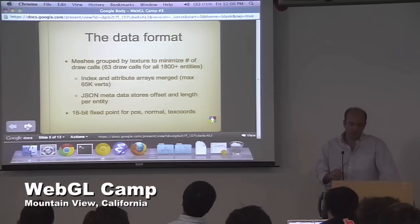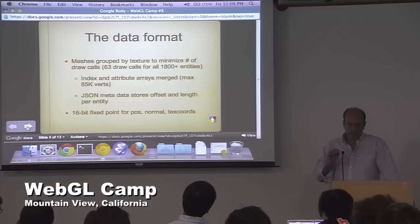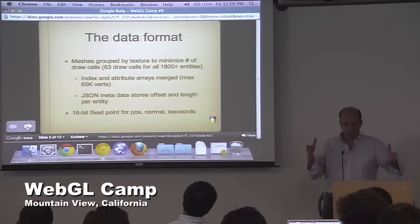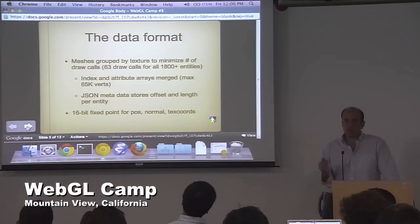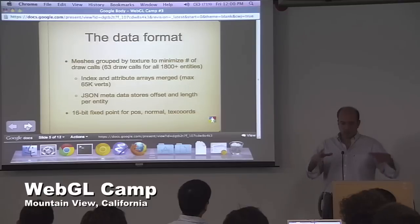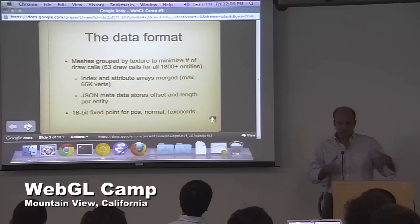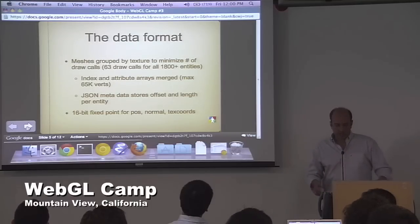At the same time, in that JSON file we kept track of exactly — in these big buckets of vertices — what the offset and length of each individual entity was. This means we could identify them and render them separately if we wanted to. For example, if you select and want to highlight a specific entity, we could easily do that by just rendering everything in that blob before it and everything after it separately.